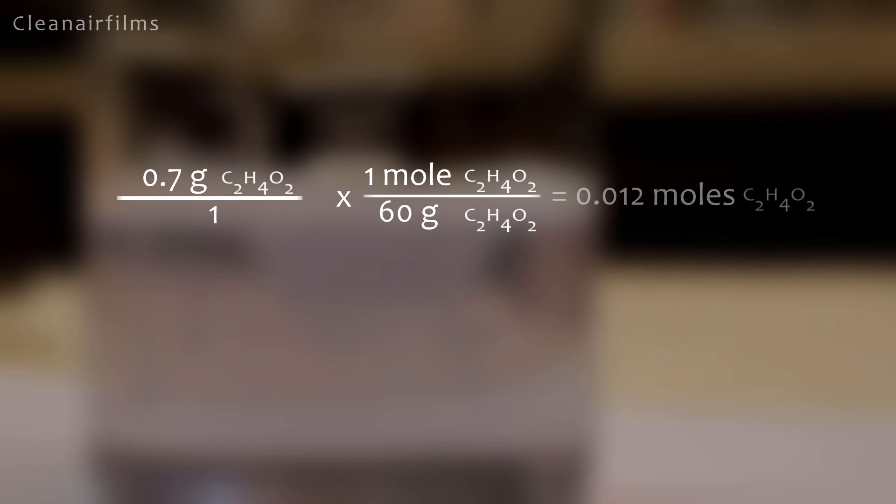From the chemical formula C2H4O2 we know how many grams are in one mole. There are 60 grams of acetic acid in one mole. Now we multiply the mass 0.7 grams by 1 mole over 60 grams. We get 0.012 moles of acid.